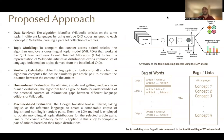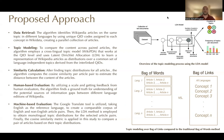Our proposed approach comprises five steps. First, a data retrieval algorithm uses QIDs, or unique identifiers, to extract articles related to a specific topic. Then, using Wikipedia as a cross-lingual topic model that works based on LDA to learn representations of Wikipedia articles as distributions over a common set of language-independent topics derived from interlinked QIDs. Then, calculating similarity between paired articles using cosine similarity. In the next step, utilizing a scale and getting feedback from human evaluators.